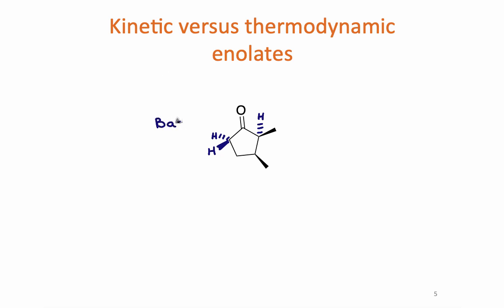So two different alpha carbons, two different protons that can be removed. The proton that's removed most quickly or most easily is the one that's least sterically hindered or the most sterically accessible.